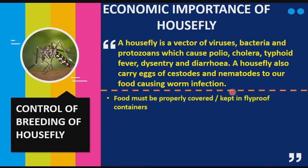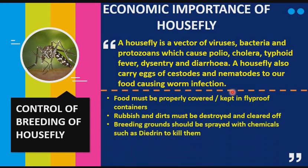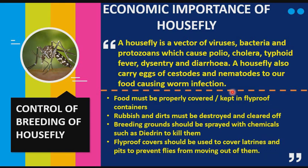The first way: food must be properly covered or kept in fly-proof containers. Another way: rubbish and dirt must be destroyed and cleared off. Breeding grounds should be sprayed with chemicals to kill them. Also, fly-proof covers should be used to cover latrines and pits to prevent flies from coming out from them.